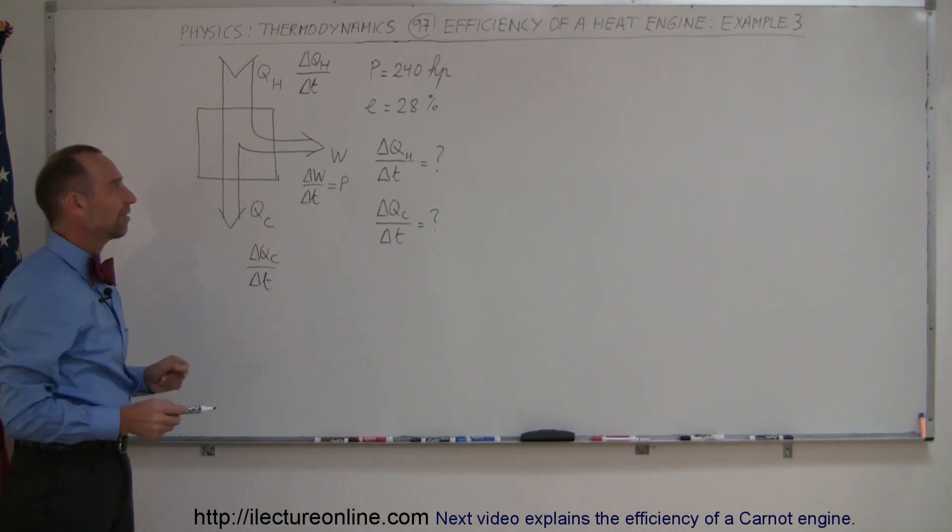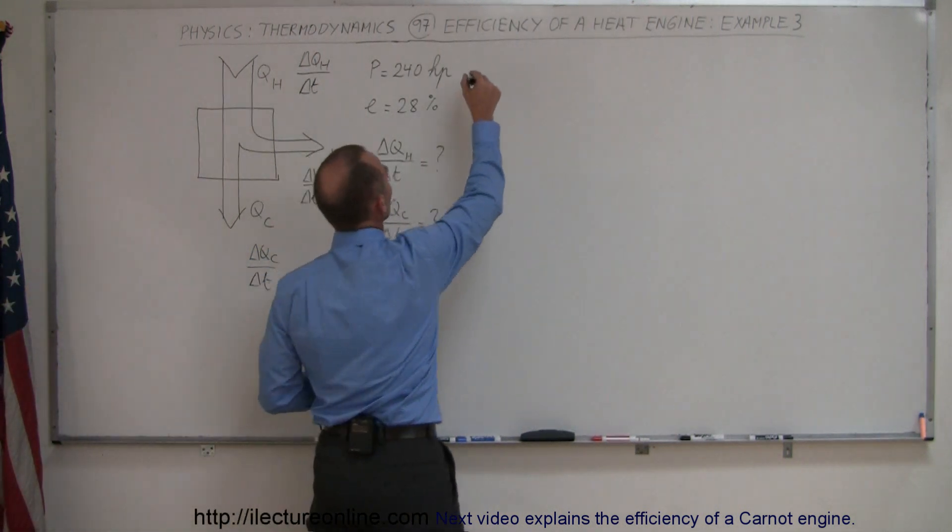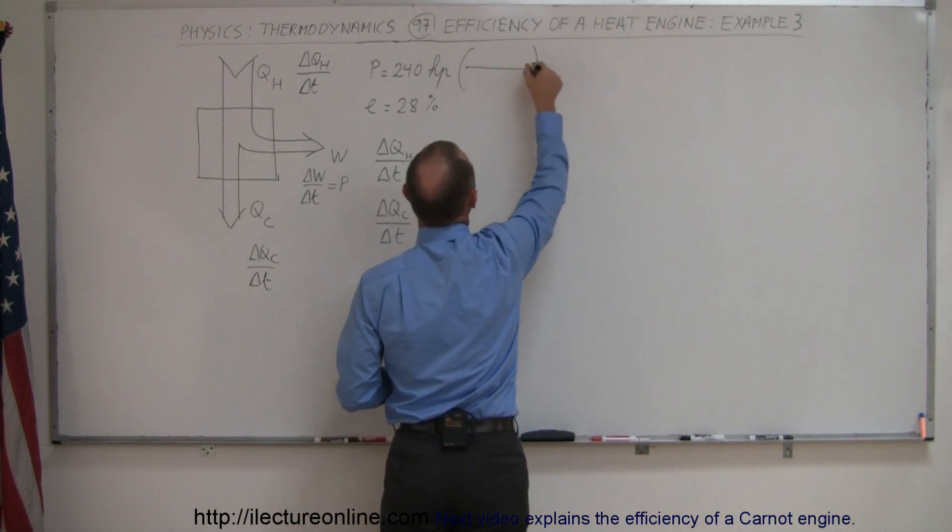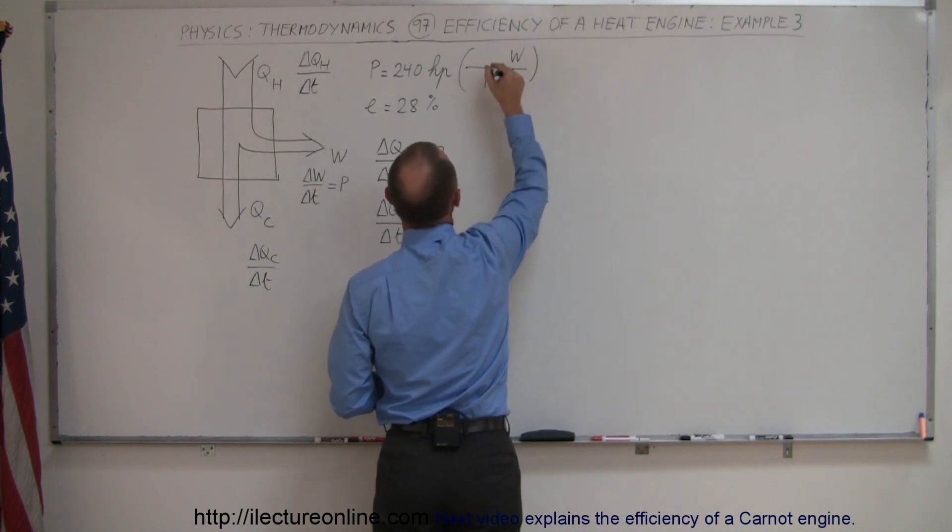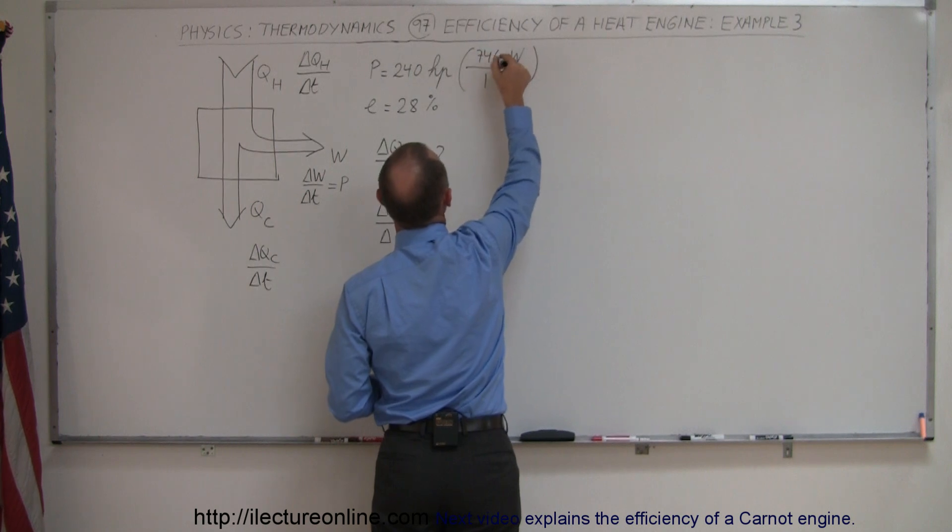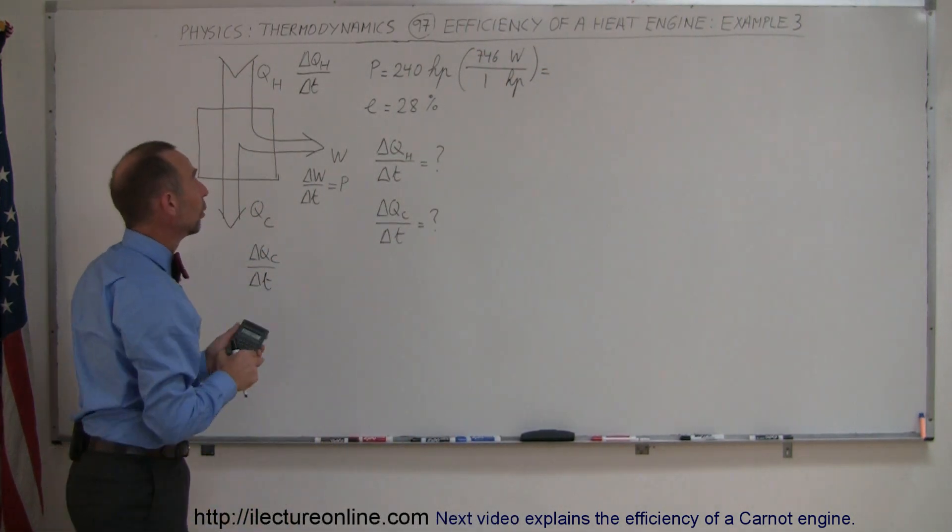units of horsepower are not standard units, so let's convert that into watts. And if we convert that, we have to use a conversion factor, watts at the top, horsepower in the bottom, one horsepower is 746 watts. So the first thing we want to do is convert that into watts.